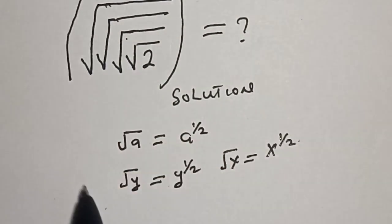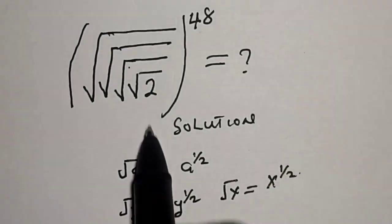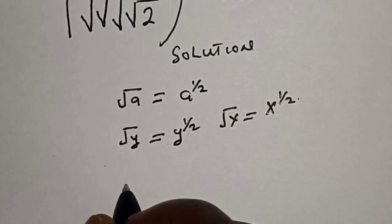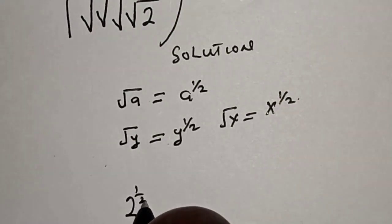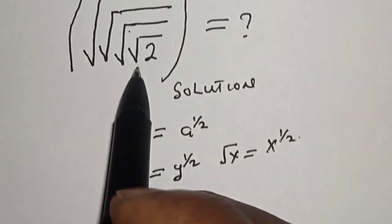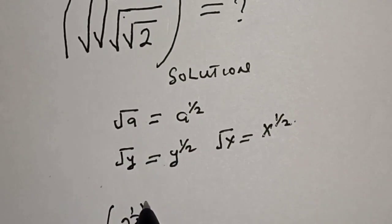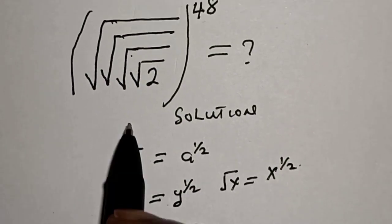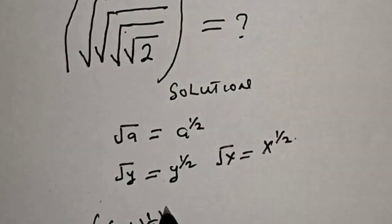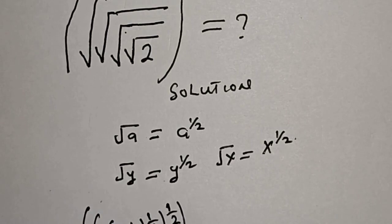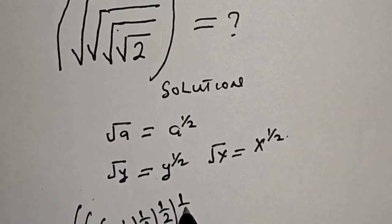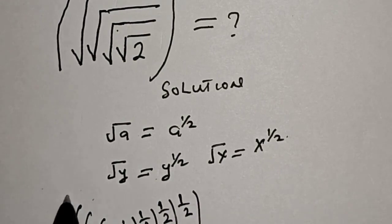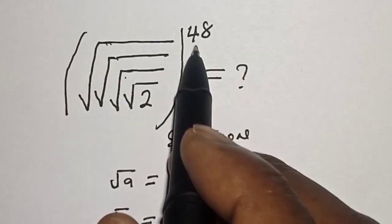We have root 2 with another root, another root, and another root, all raised to the power 48. This can be written as 2 raised to the power 1 over 2, then with this other root raised to the power 1 over 2, all raised to the power 48.